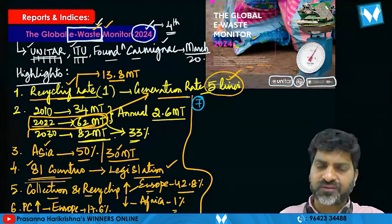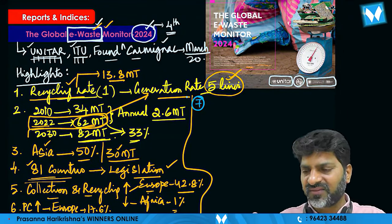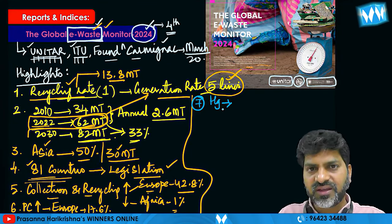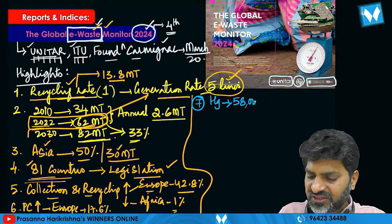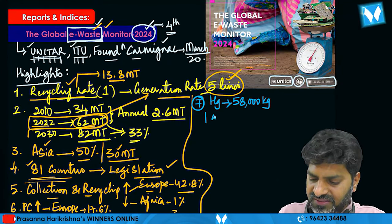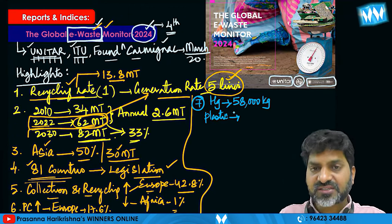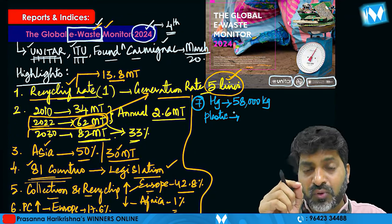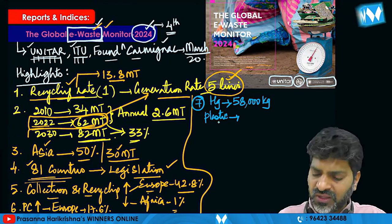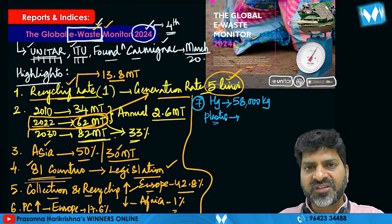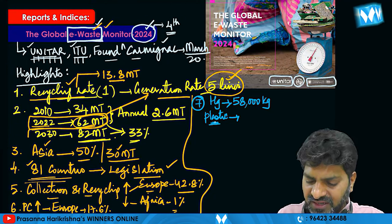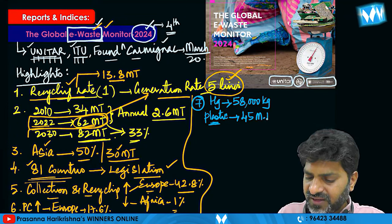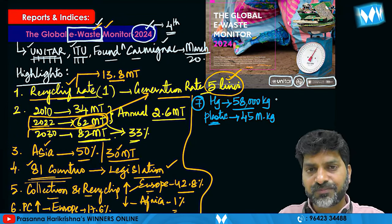The e-waste contains hazardous elements like mercury (Hg) — about 58,000 kg — and plastic that contains brominated flame retardants. The plastic containing bromine-based flame retardants in e-waste amounts to around 45,000,000 kg.